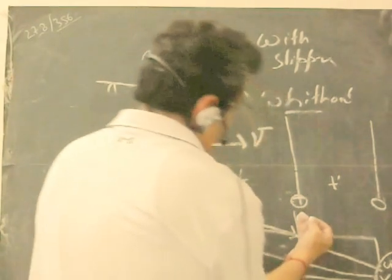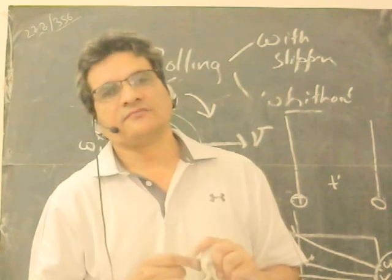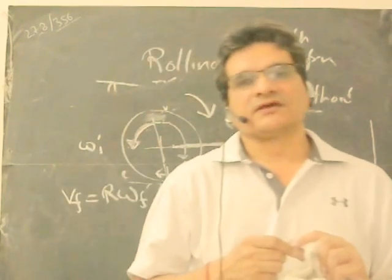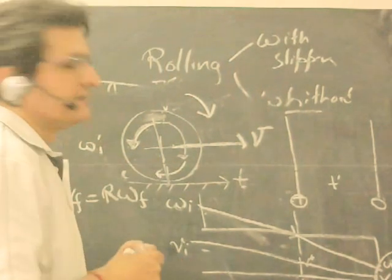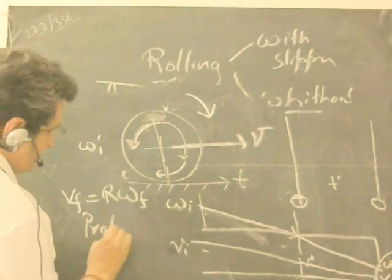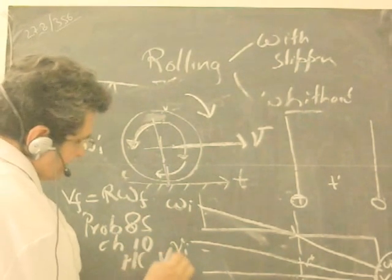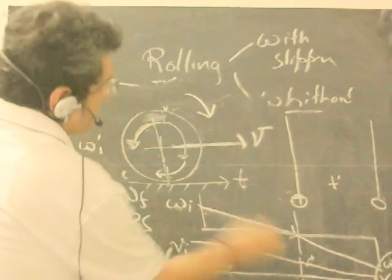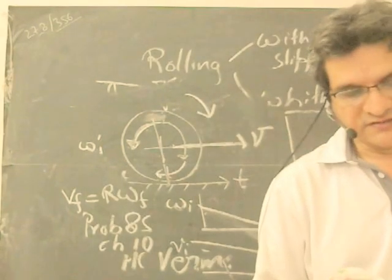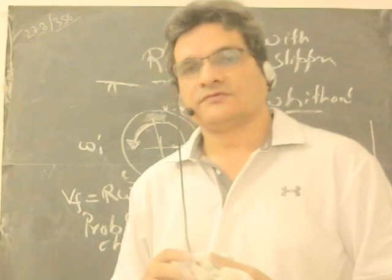This case is taken from HC Verma problem 85, chapter 10. It is on my channel — you can see the detailed solution in that lecture. Problem 85, chapter 10 of HC Verma is a very interesting problem based on this concept. These are just a few points on how to solve rotational motion problems where there is rolling with slipping, and then after some time pure rolling begins. That's all, thank you.